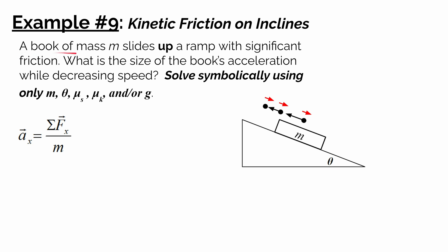The question reads: a book of mass m slides up a ramp with significant friction. What is the size of the book's acceleration while decreasing speed? Solve symbolically using only m, theta, mu sub s, mu sub k, and/or g. We're going to find an expression for the size of the acceleration involving only these variables.